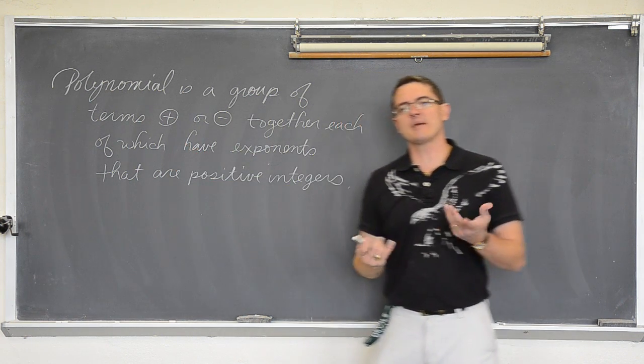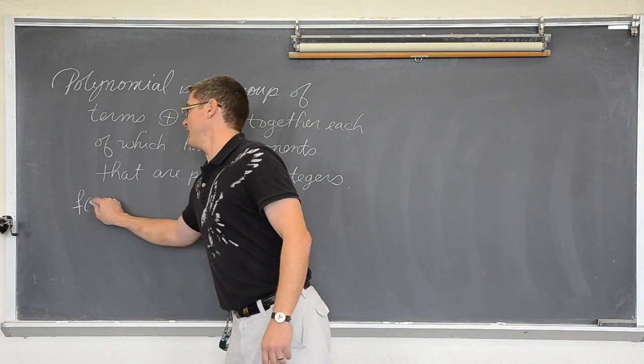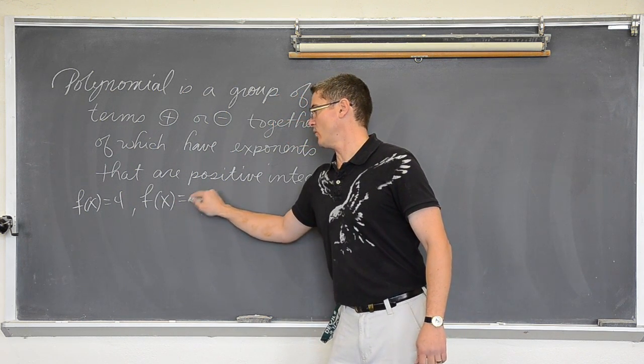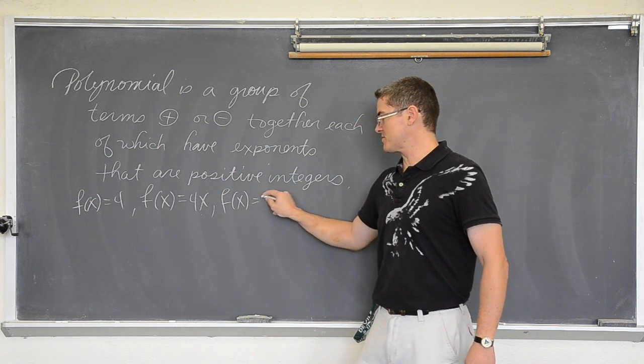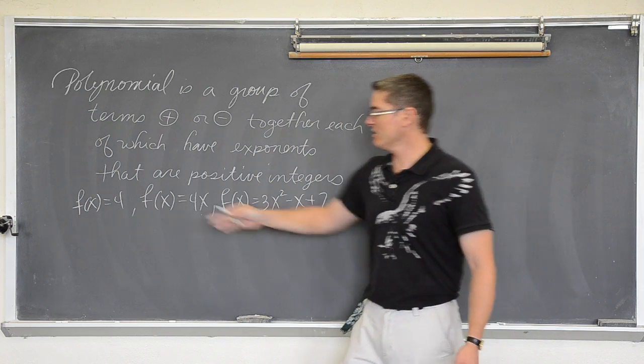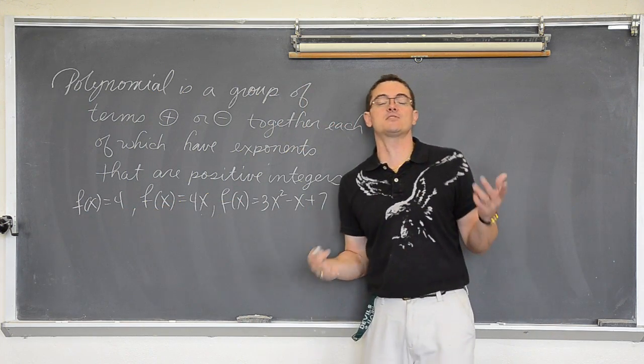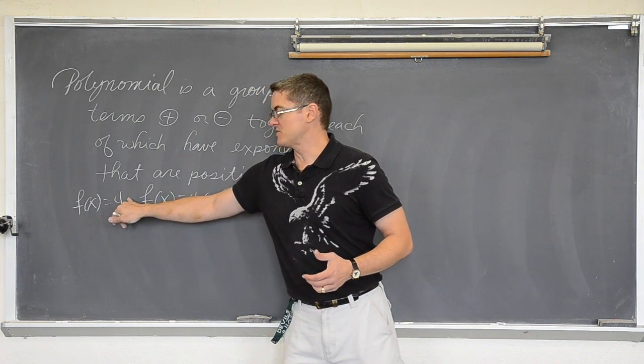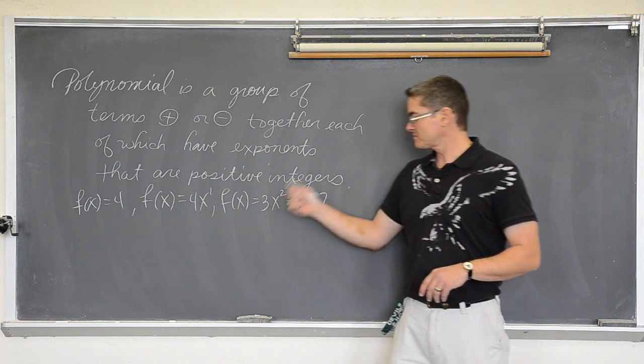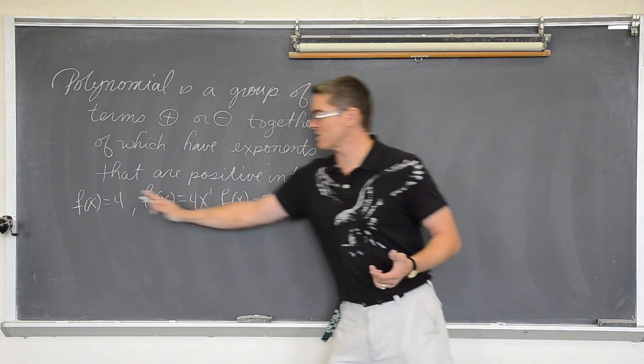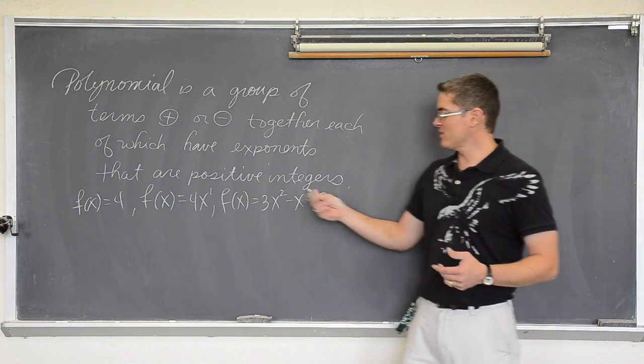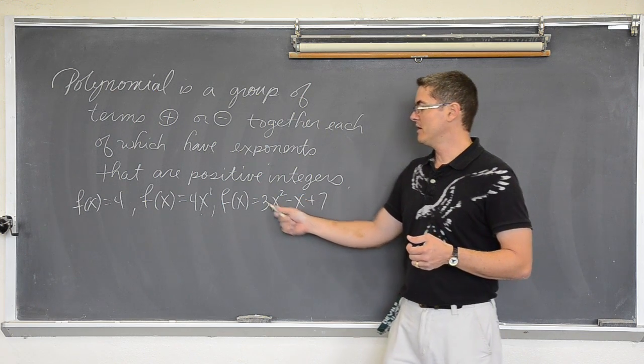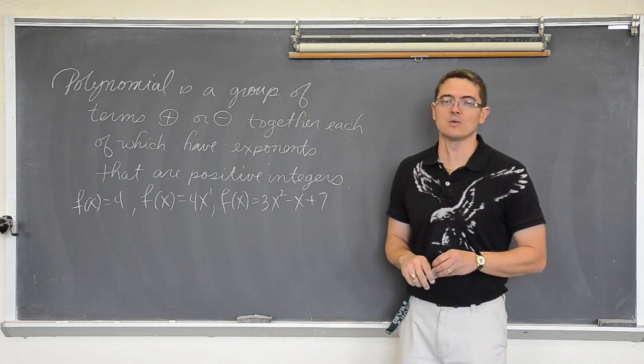Let me talk about some examples of polynomials. Like f of x equals four, just a horizontal line. Or f of x equals four x. f of x equals three x squared minus x plus seven. All of these, one term, one term, or this trinomial, you can have five, six terms. This has basically an exponent of zero, an exponent of one, exponent of two, and all of these terms have exponents that are positive integers. By the way, the degree of a function is its highest exponent. So the degree of this equation would be two, the degree of this equation would be one, and the degree of this first example would be zero.